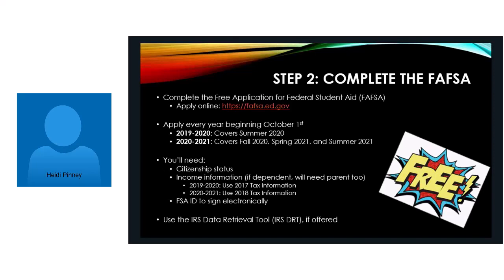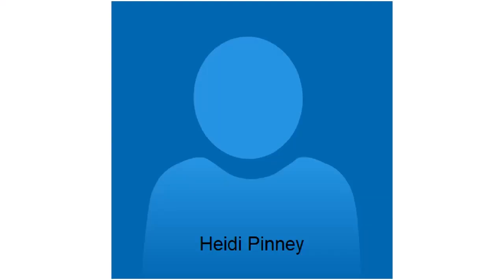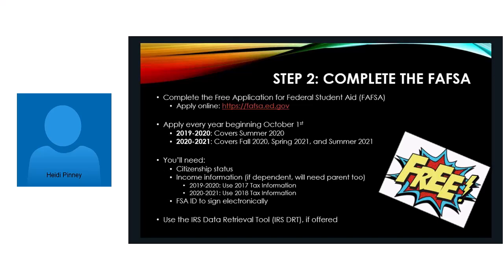For those students who are planning to attend Summer B, you will need to complete the 2019-2020 FAFSA form. For those who are planning to attend for Fall and Spring, you'll need to complete the 2020-2021 FAFSA form. It can get confusing because the system defaults to the 2020-2021 form, so remember if you are planning to attend this summer, you want to make sure you do the 2019-2020 FAFSA form.